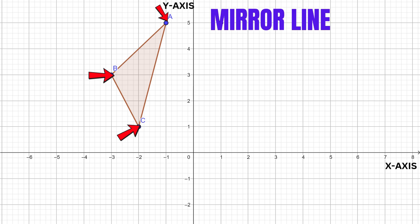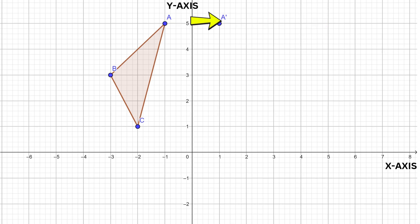We are reflecting this triangle in the y-axis, so the y-axis is the mirror line. Notice the point A is one unit away from the y-axis. That means the image of point A will also be one unit away from the y-axis on the other side.